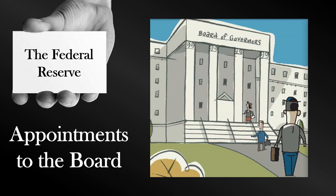When we think about the Board of Governors, we have to understand the appointments to the board. At the core of the Federal Reserve System is the Board of Governors — a federal government agency that is the Fed's centralized component, located in D.C. The board consists of seven members appointed by the President of the United States and confirmed by the Senate. A governor's term is 14 years, though it is possible for a governor to serve a longer term — for example, William McChesney Martin Jr. served nearly 19 years because he was appointed as chairman to complete another person's term and was then appointed to his own term.